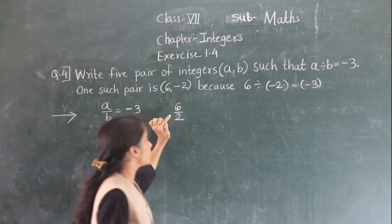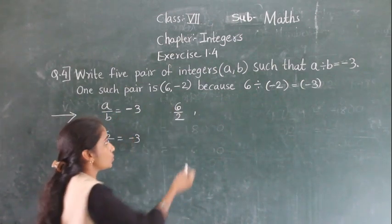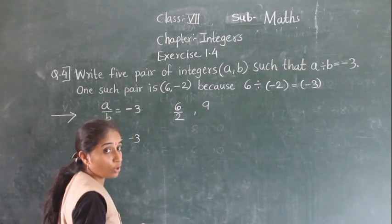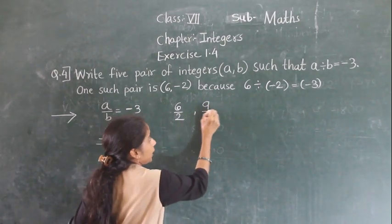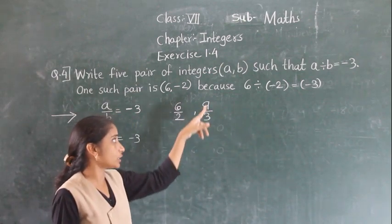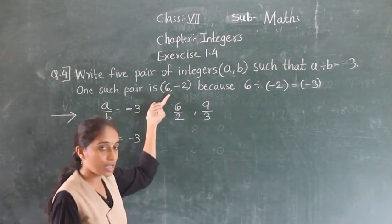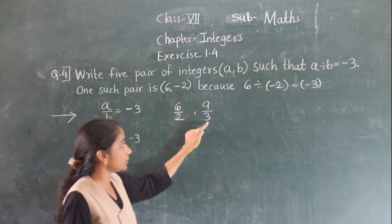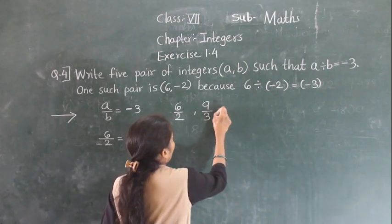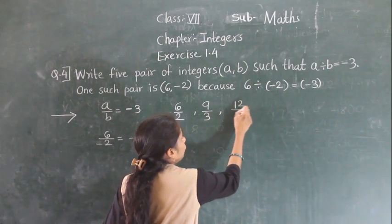6 upon 2 gives us 3. We can find the next pair also: 9 upon 3 also gives 3. Three 3s are 9. Next, 12 upon 4 gives 3, because 4 threes are 12.